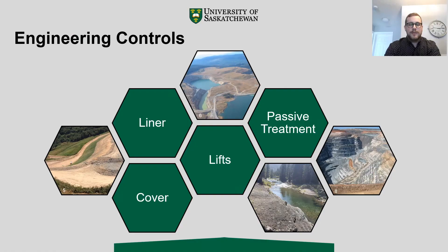With the Trimble Phase 2 waste rock dump, the engineering controls that our team decided to put in place to produce the most effective solution were a cover, a liner, and intermediate lifts. By using a cover and liner consisting of 5% bentonite by weight, we can reduce the water and oxygen infiltration into the waste rock dump. By adding internal lifts composed of ground-up paste tailings, which are a byproduct of typical mining operations, we are able to limit the chemical reactions taking place and control the internal temperatures of the dump more effectively.